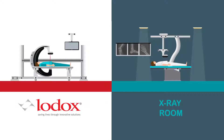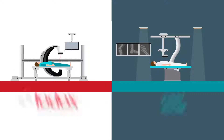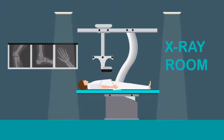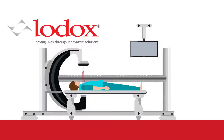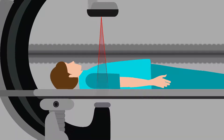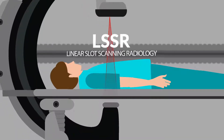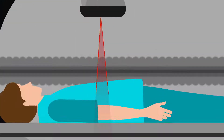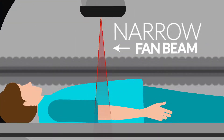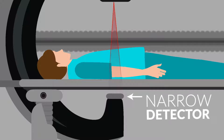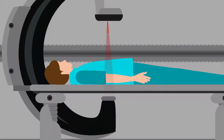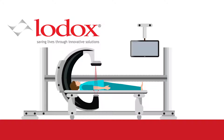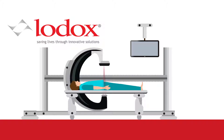The fundamental difference between the dose and scatter radiation produced by LODOX versus other X-ray modalities can be attributed to the way in which LODOX X-rays are produced. LODOX employs Linear Slot Scanning Radiology Technology, or LSSR. A very narrow fan beam is projected over the subject and the X-rays are detected by a narrow detector on the opposite side of the C-arm. Because of the thinly collimated beam, very little X-ray scatter occurs, and the full dose of X-rays is utilized efficiently.